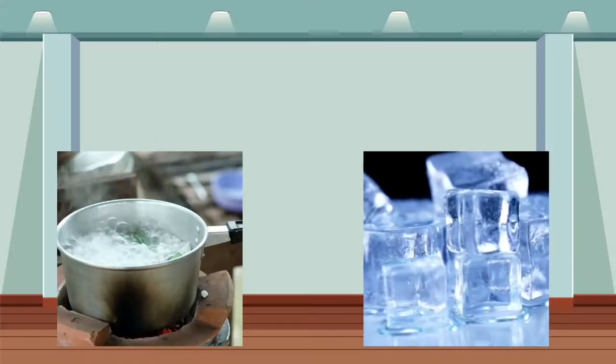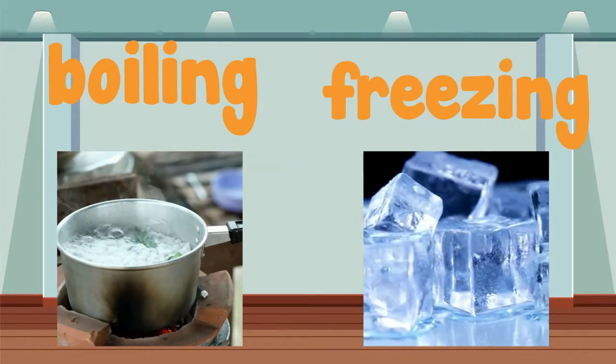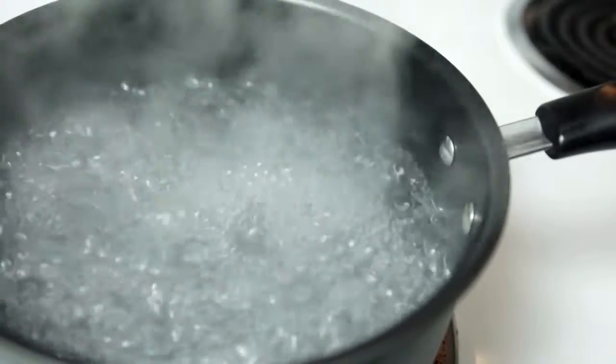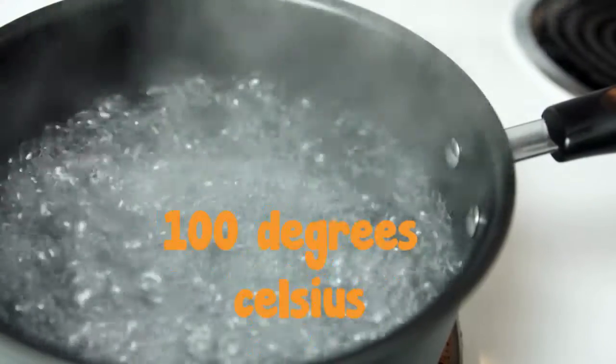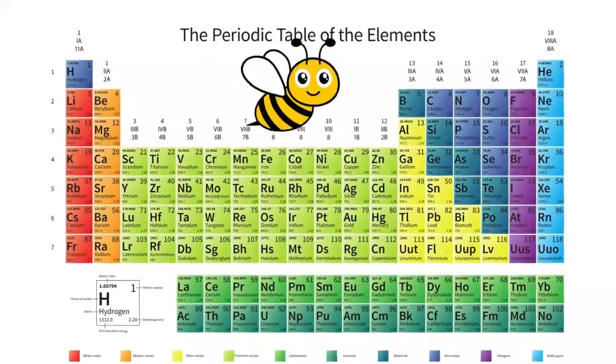Every liquid has a specific boiling and freezing point, which can vary under different pressure conditions. Water, for example, boils at 100 degrees Celsius and freezes at 0 degrees Celsius. Everything in the world is made up of the elements found on the periodic table.